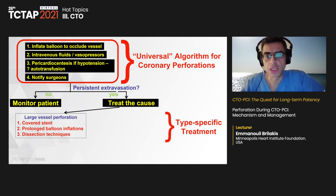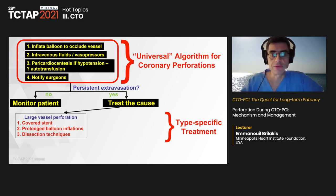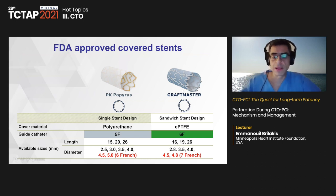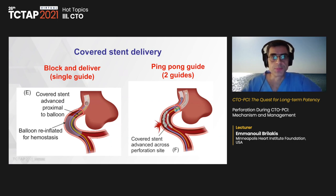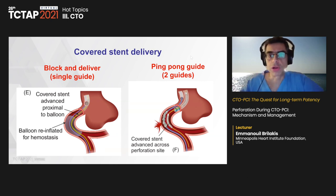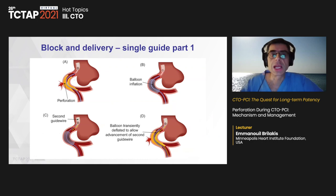Covered stents can be delivered either through a single large guide catheter — seven or eight French — or using two guide catheters, called the ping-pong technique. For the single guide approach: first a balloon is inflated, then a second wire is advanced through the same guide, the balloon is deflated, and the covered stent is delivered. We don't generally reverse anticoagulation unless there is continued extravasation, and we remove wires and stents from the vessel as part of management.